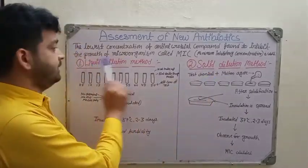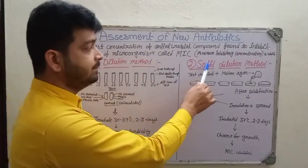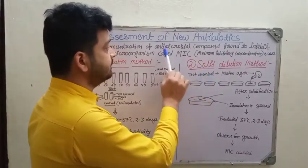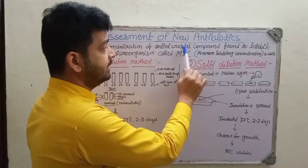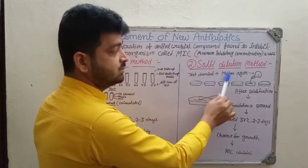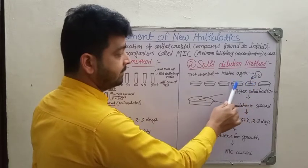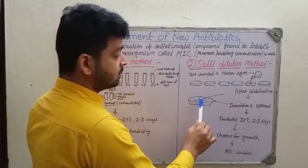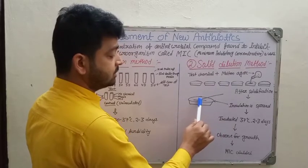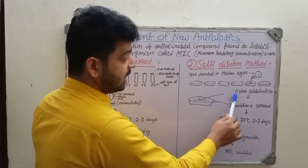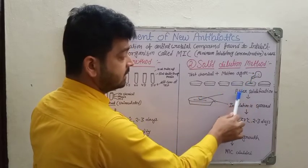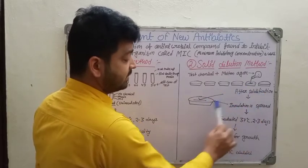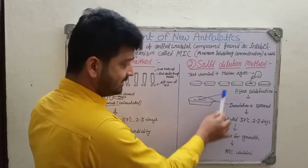Moving to the solid dilution method, here the media is in solid form. The test chemical — the antimicrobial agent or compound — is mixed with molten agar and poured into different petri plates. After solidification, the test inoculum is spread onto the agar surface.